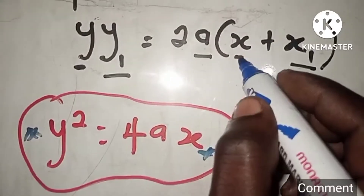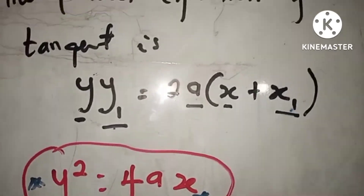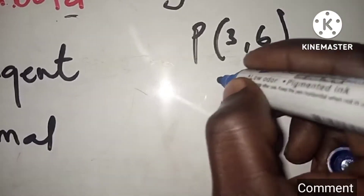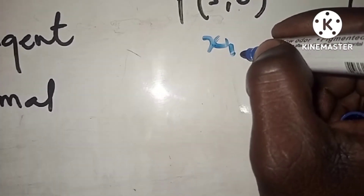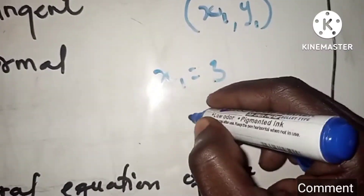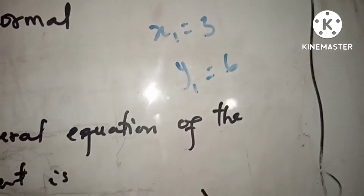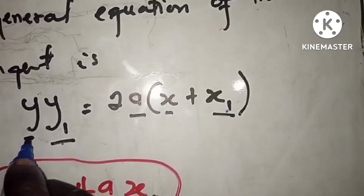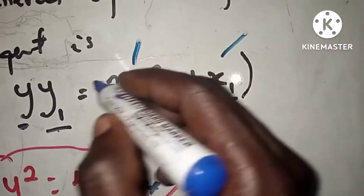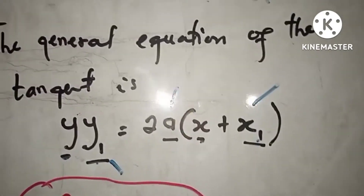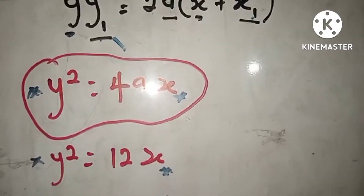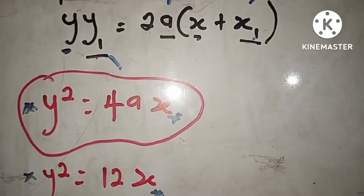Now x₁ and y₁ are the points given to us from the question. The point is three comma six, so x₁ is the first coordinate and y₁ is the second. This means x₁ equals 3 and y₁ equals 6. That is all we need. Now that we have found a, x₁, and y₁, we are free to determine the tangent equation.